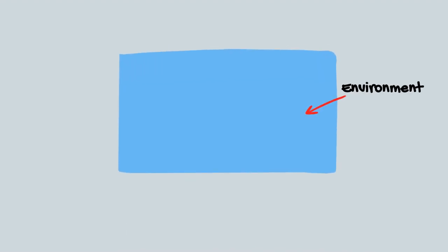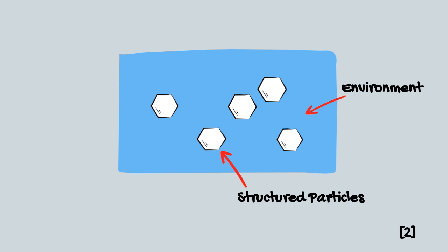There are four key factors influencing self-assembly. They are the environment, structured particles, driving force, and the binding force between the particles.